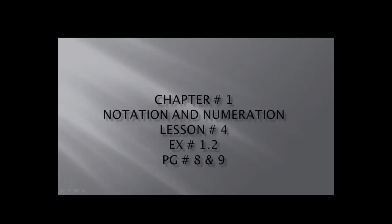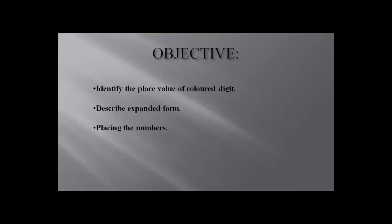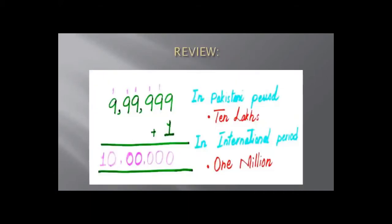Our fourth lesson is also from chapter number one, from your textbook pages five, six, seven, till nine. First, I want to give some review about yesterday's topic, which was working with seven-digit numbers. In lesson one and lesson two, we learned how to work with six-digit numbers. Today's objectives are: number one, identify the place value of a colored digit; number two, describe expanded form; and number three, place numbers in both Pakistani way and international way.